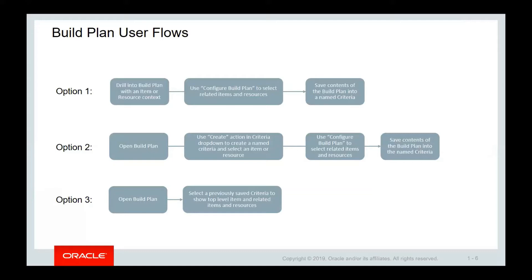The next option is to open build plan using the page-level open button. By doing this, the build plan opens in standalone mode in an empty state. Then you can use the create action to determine what item or resource you want to display as your starting point. From here, you use the configure icon to select the related items, resources, and supplier items that you want to display, and optionally save your selection under a named criteria. Finally, the last option is to open build plan using the page-level open button and then select the previously saved criteria.